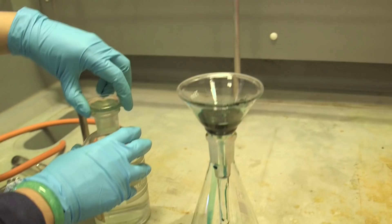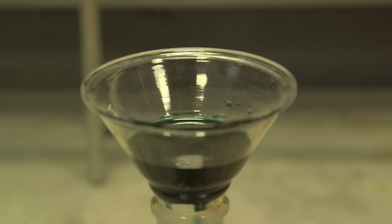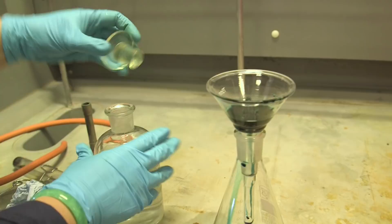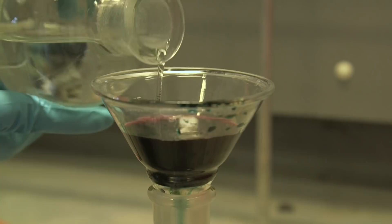And so you get permanganate back again, plus a precipitate, which you may or may not be able to see, of manganese dioxide, which is a brown solid.